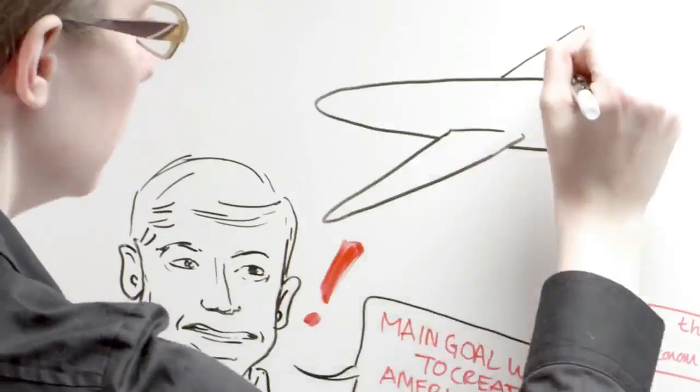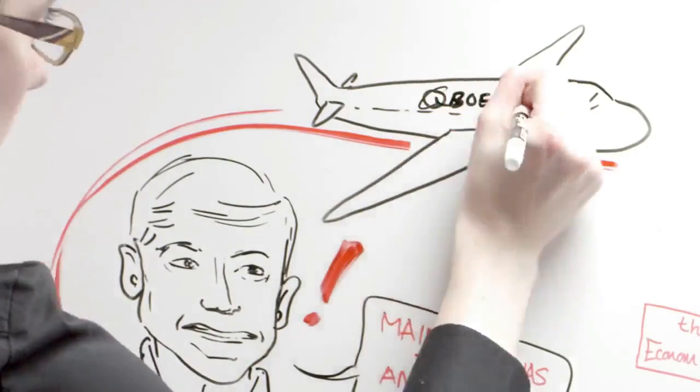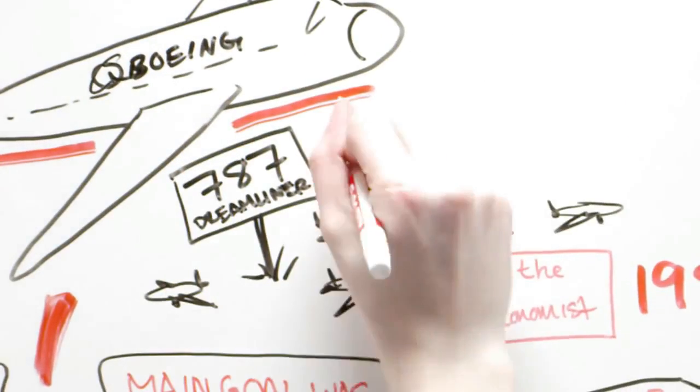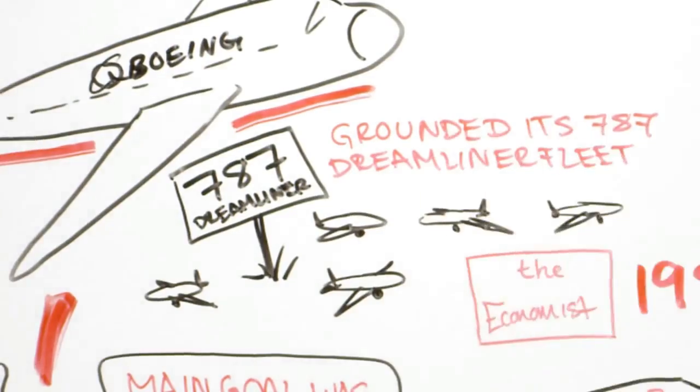Then there's Boeing, the poster company for outsourcing gone bad. The aerospace giant's saga of flawed batteries has grounded its 787 Dreamliner fleet until a fix can be found.